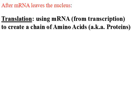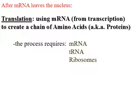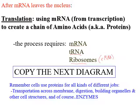After the mRNA leaves the nucleus, the process of translation takes the mRNA and uses it to create a chain of amino acids — link all these amino acids in a long chain and you get proteins. The process requires lots of different RNA: not only your mRNA, but also tRNA and ribosomes. Ribosomes are actually made up of RNA — they're called rRNA. So you actually have three different types of RNA working in this process.